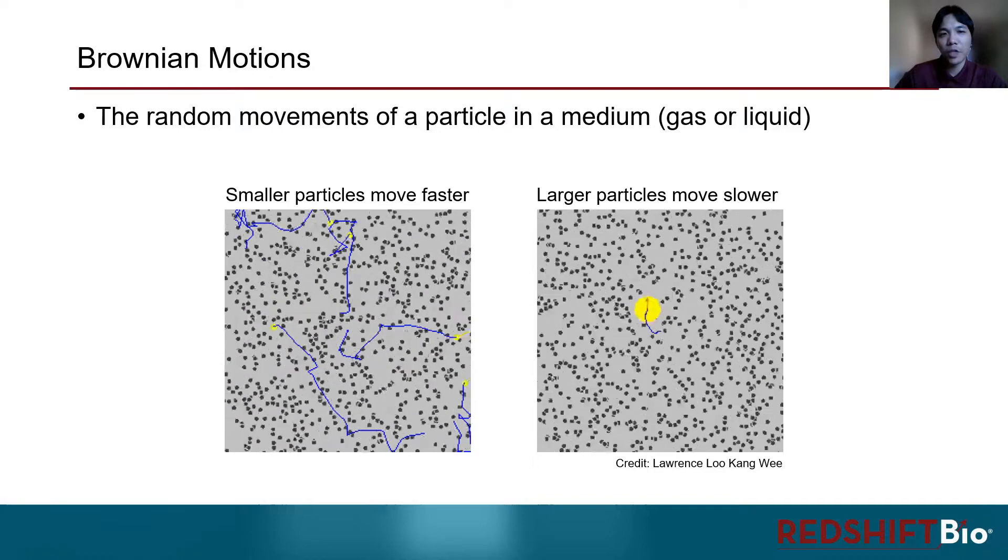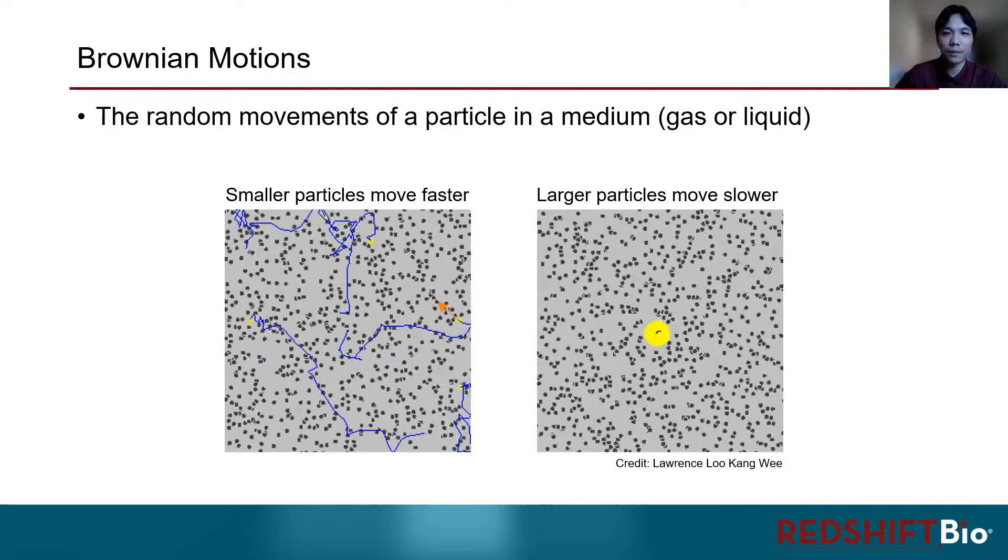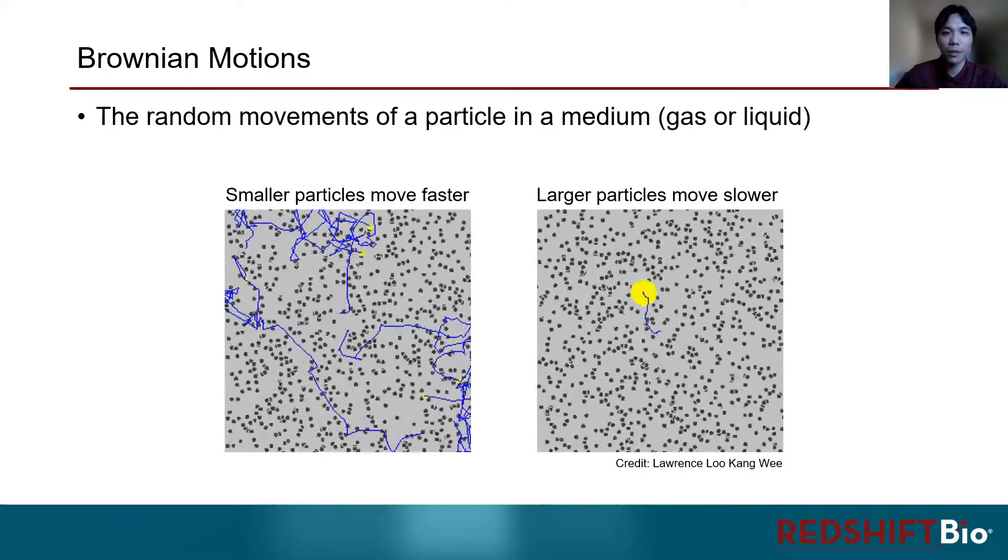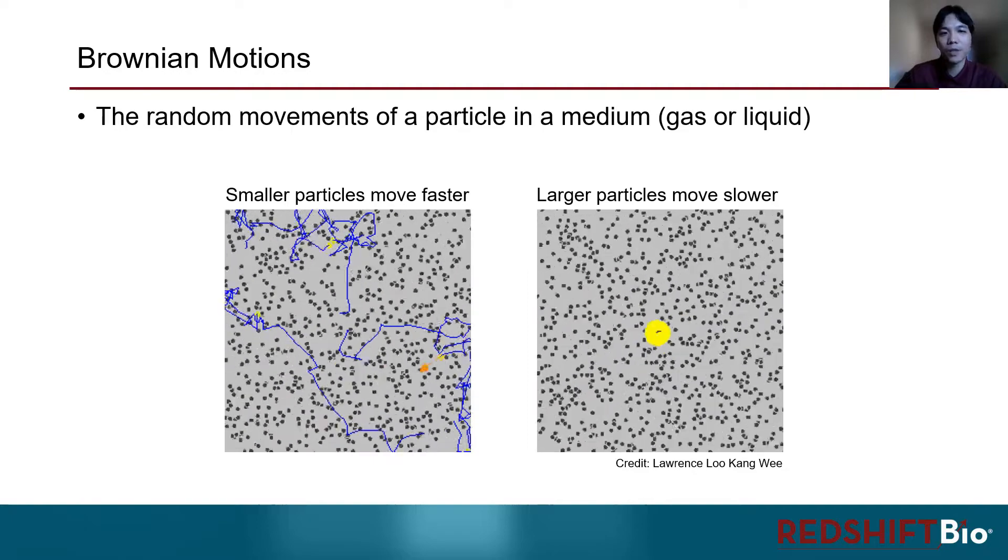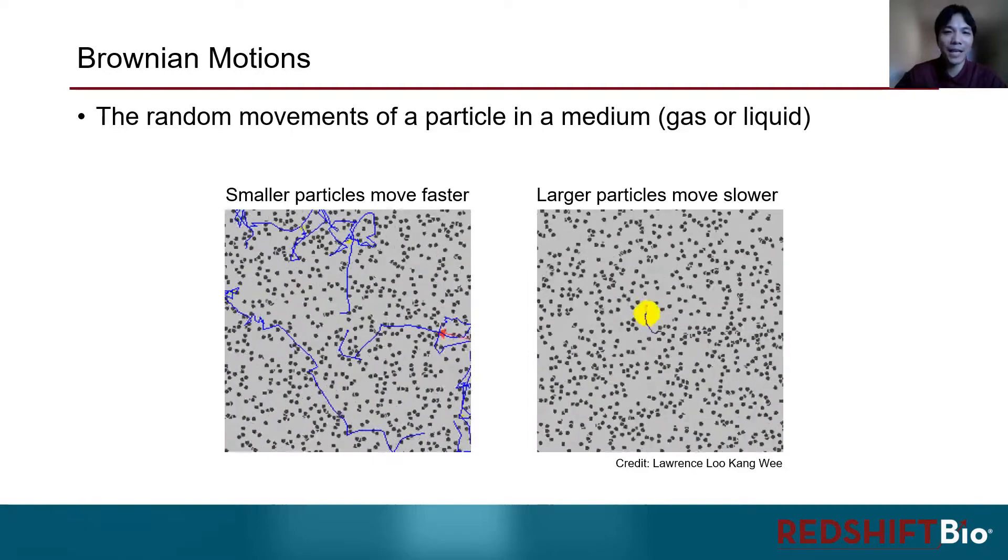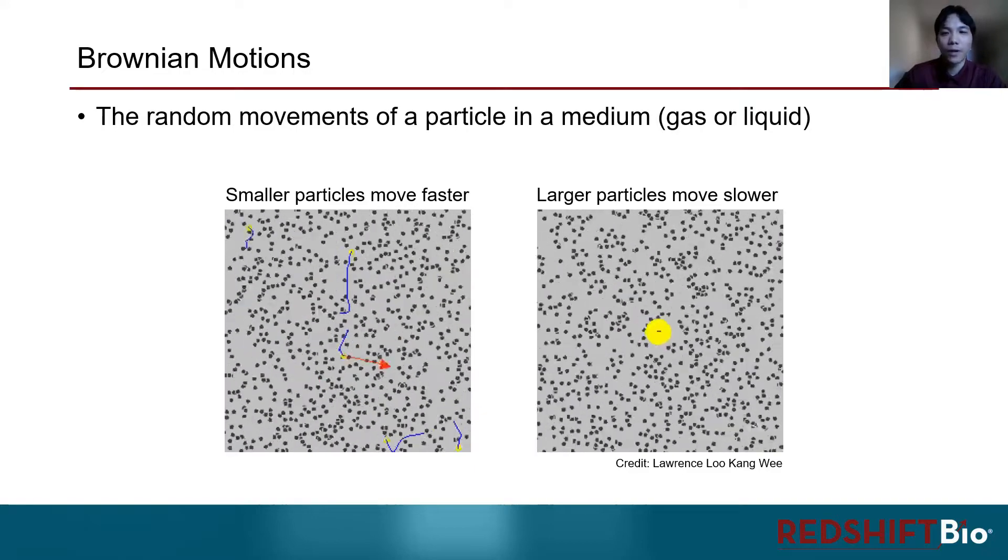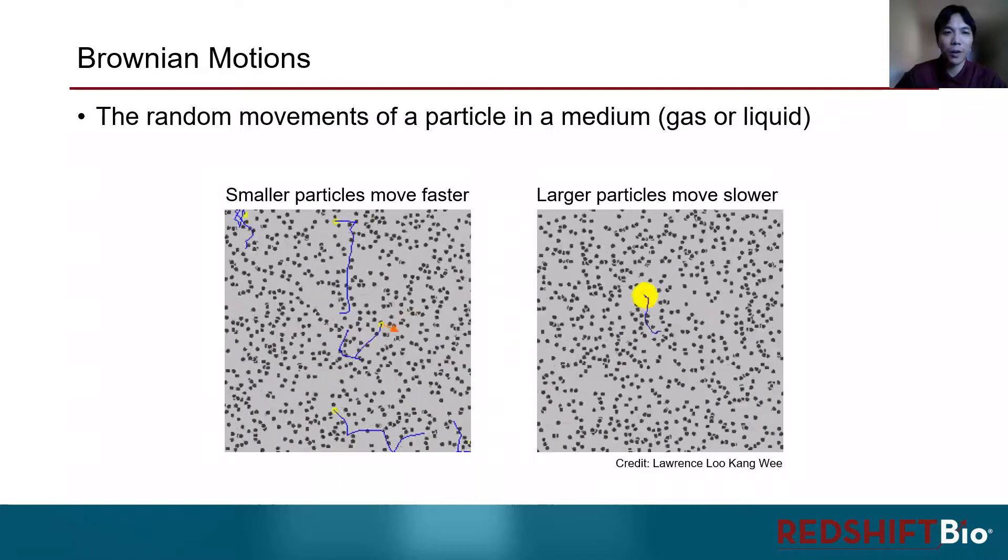Now before I jump into explaining dynamic light scattering, let me introduce one key concept, Brownian motion, which is the fundamental basis of DLS. Brownian motion describes the random movements of a particle in a medium such as gas or liquid. The randomness of Brownian motion comes from the collision of the particle with the surrounding molecules.